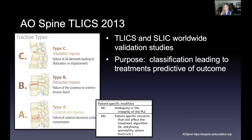Type C by definition will always have a component of B — it must have anterior or posterior tension band injury to produce that translation, and will likely also have a component of A. If you rule out C and go to B, it's not going to progress to C unless a further trauma occurs. Type A, involving only the anterior column with no tension bands, won't move to B or C barring additional injury.